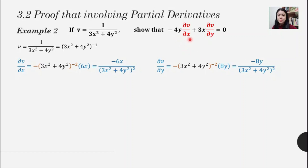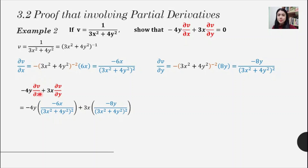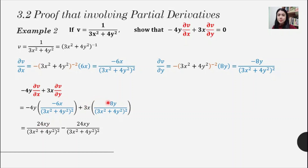Now we look at the left-hand side of the equation and substitute our first order partial derivatives. Substituting del v/del x and del v/del y and expanding: negative 4y multiplied by negative 6x gives 24xy, and expanding the other term gives negative 24xy. Since both terms share the same denominator, focusing on the numerator: 24xy minus 24xy equals zero.